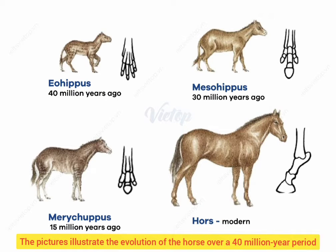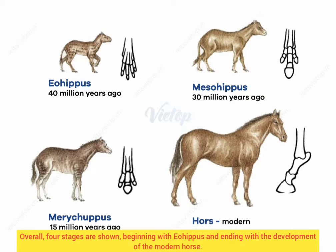The pictures illustrate the evolution of the horse over a 40 million year period. Overall, four stages are shown, beginning with its earliest ancestor and ending with the development of the modern horse.